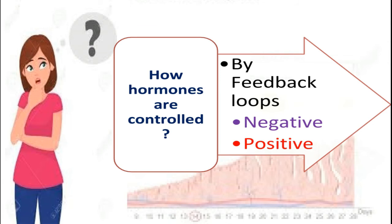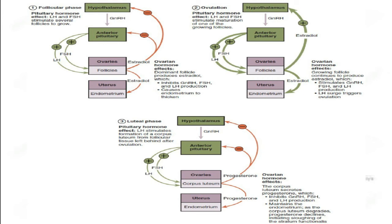An interesting question arises: hormones are controlling the physiological functions of the menstrual cycle, but who is controlling these hormones? The answer is feedback loops — positive and negative — which control these hormones. Starting from the hypothalamus, which releases gonadotropin-releasing hormone (GnRH), this positively signals the pituitary to produce follicle-stimulating hormone (FSH) and luteinizing hormone (LH), which in turn pass orders to the ovaries and uterus to produce their hormones.